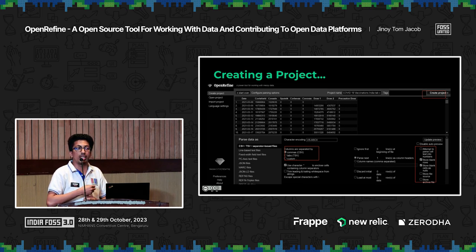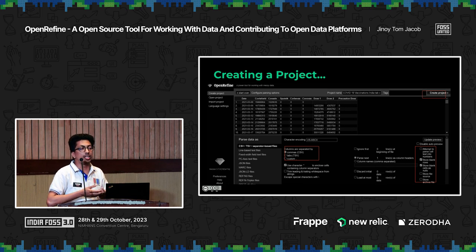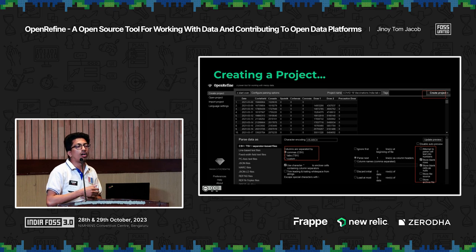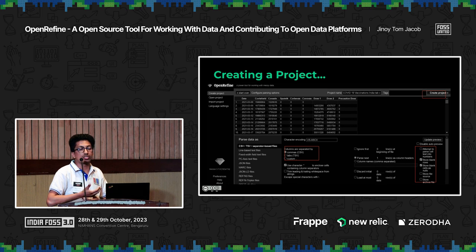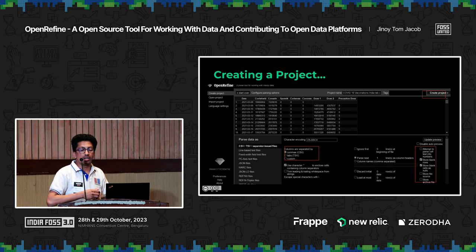Previously, you had to go to each individual language — Malayalam, English, Hindi, every language — and update the information separately. On English Wikipedia it gets updated very fast, but for some local languages where the number of volunteers is very small, updates get delayed. Using OpenRefine, I was cleaning up that information and contributing to the Wikidata project.